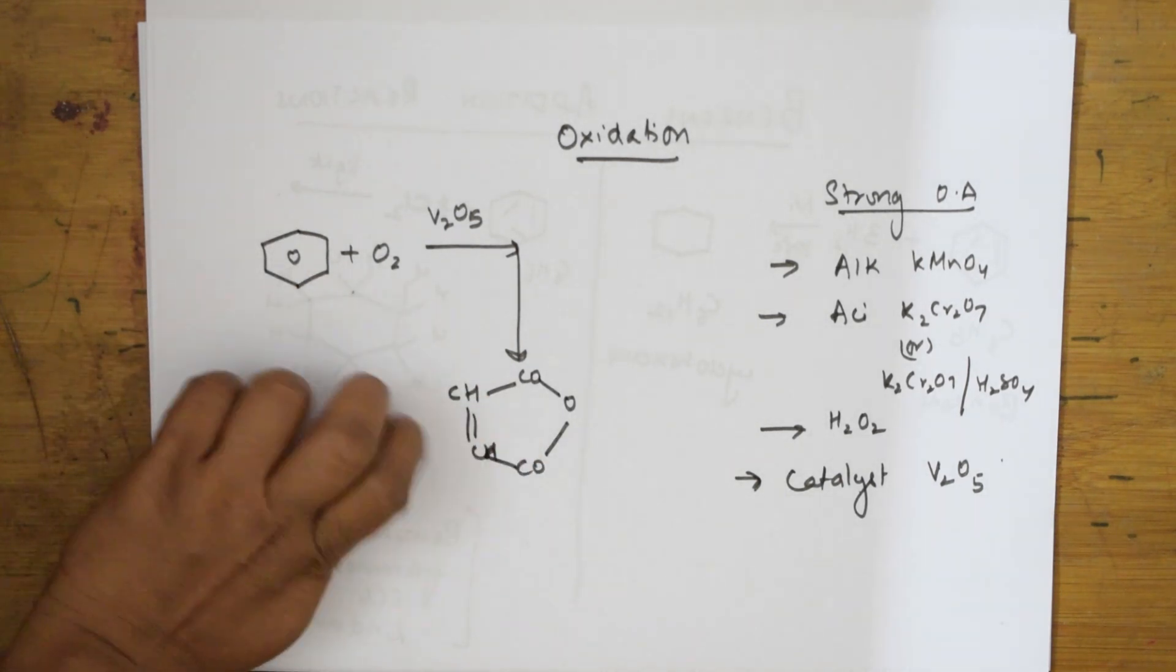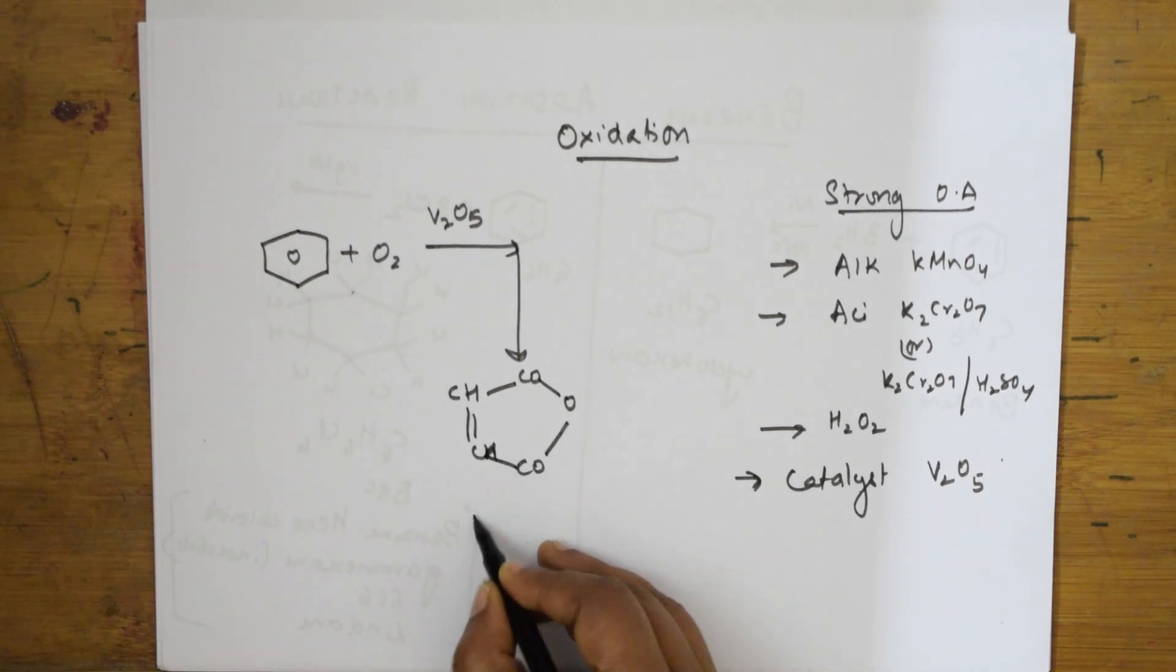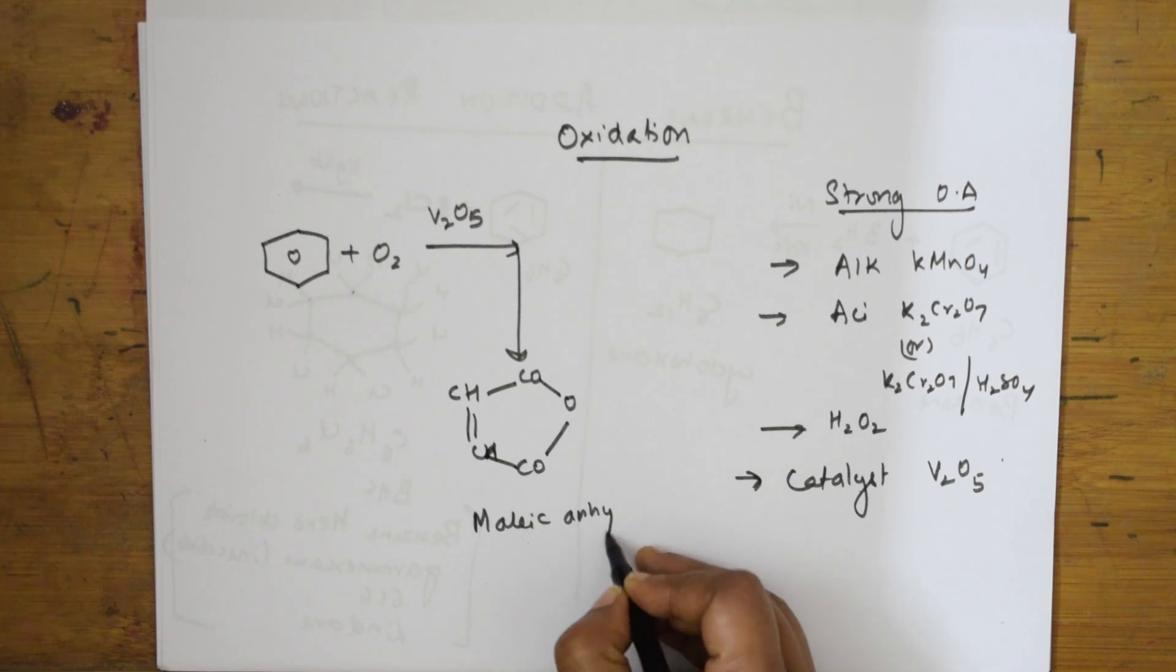This is the product formed. The bond breaks up, oxygen adds here, the carbon is already there, and oxygen finally forms maleic anhydride.